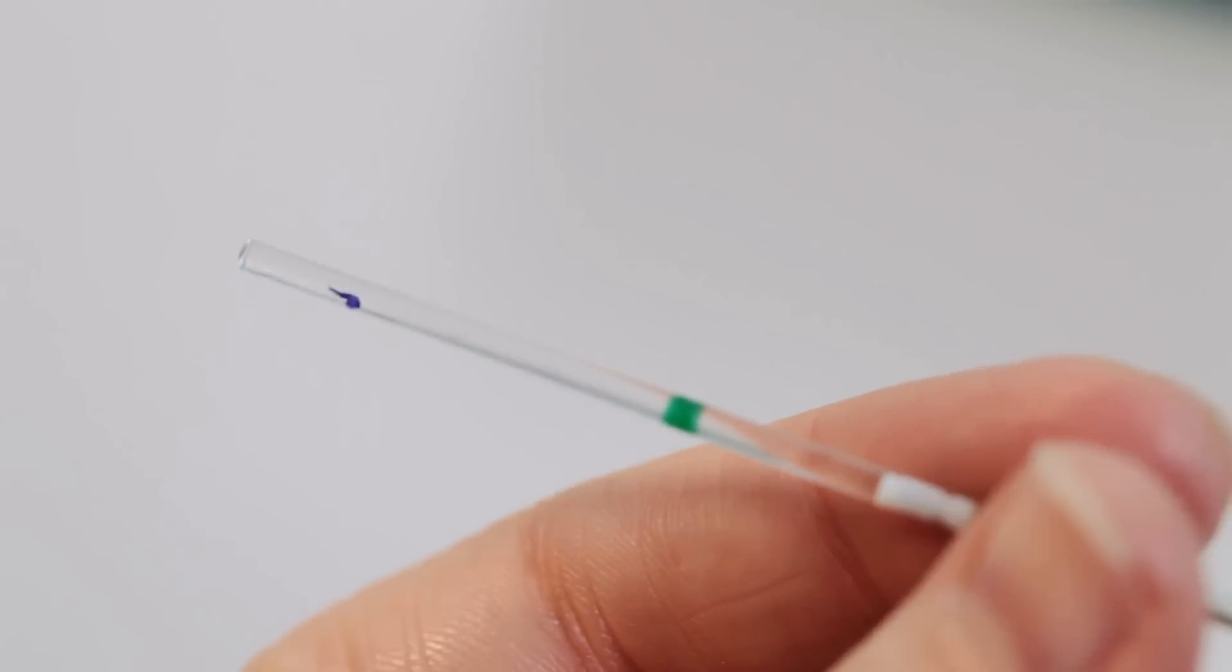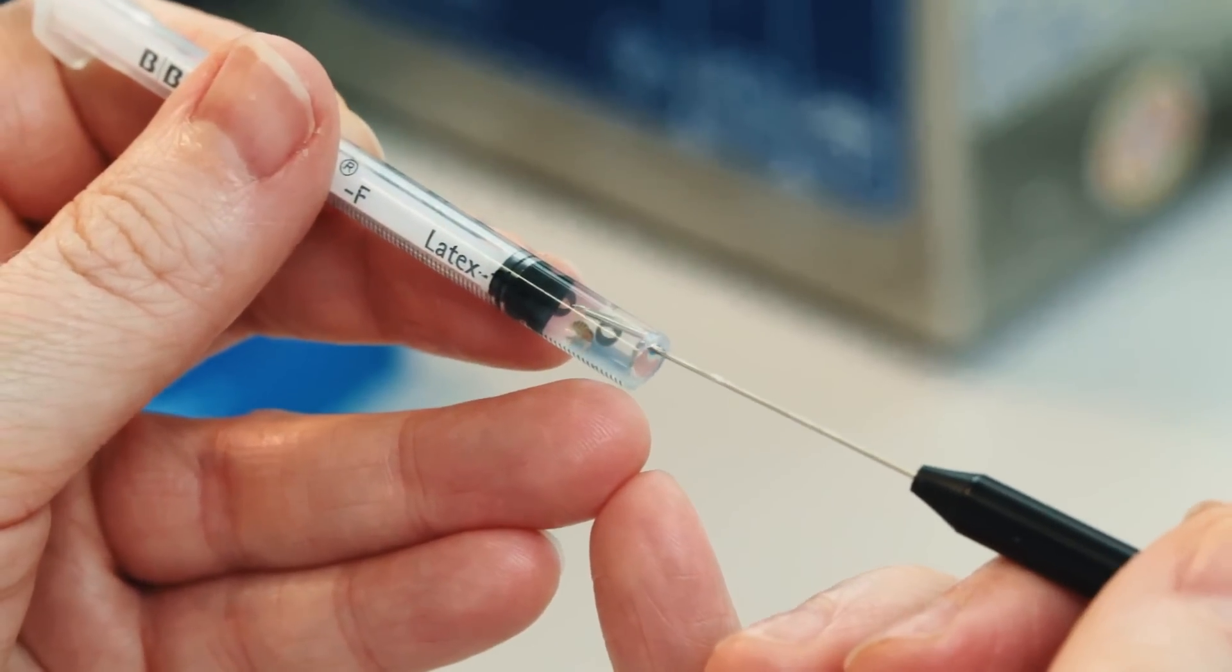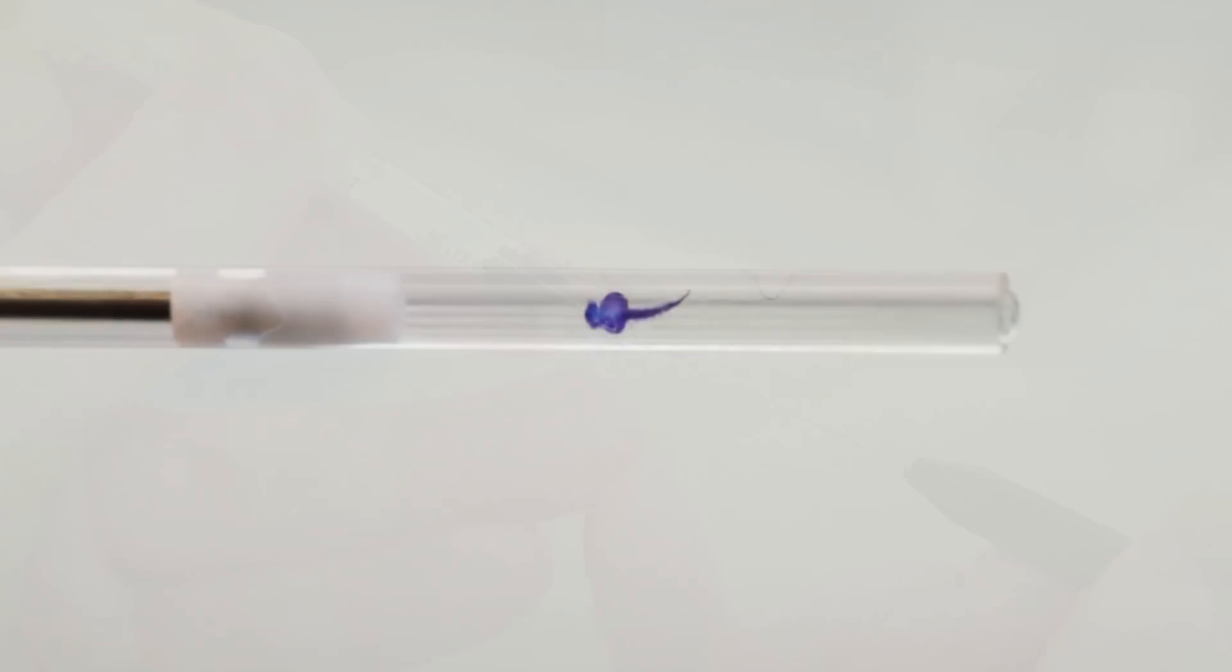Rotate the capillary to align your sample in the center of the cylinder. Finally, use a needle to position your specimen while the agarose hardens.